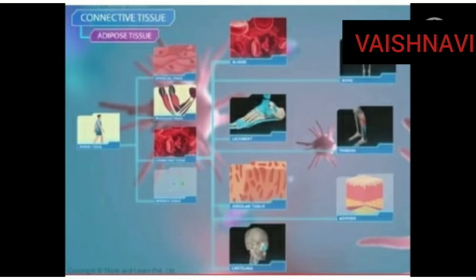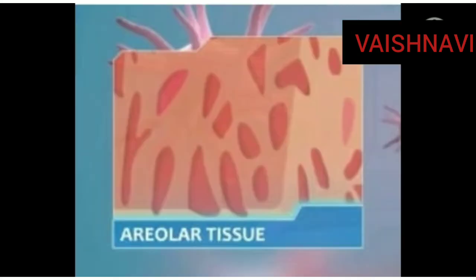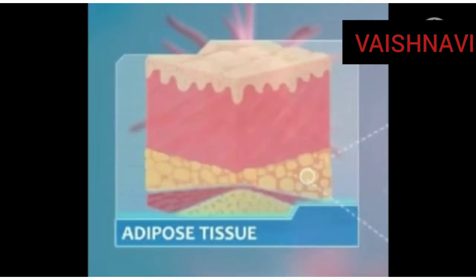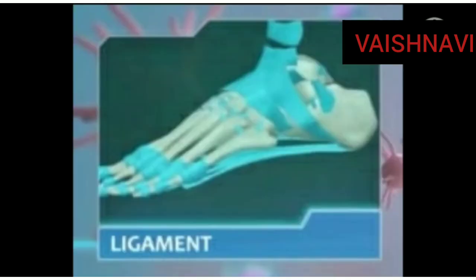They are areolar tissue, adipose tissue, ligament, bone, cartilage, tendon, and blood. First one is areolar tissue — it joins different tissues, helps in packing, and helps to keep organs in place. These cells also help in repair of tissue when they are injured. Second one is adipose tissue — it stores fat below the skin and between internal organs, and this storage of fat also acts as an insulator.